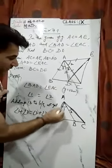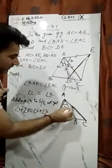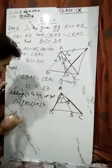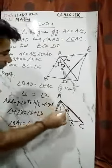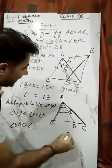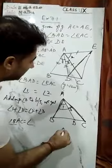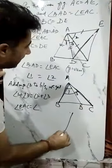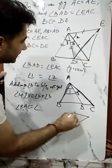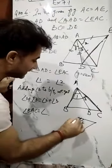Now angle 1 plus angle 3 together will form angle BAC. So angle BAC will come. And angle 2 plus 3, you can write this as 2 plus 3 means if we move from here, this is angle 2.